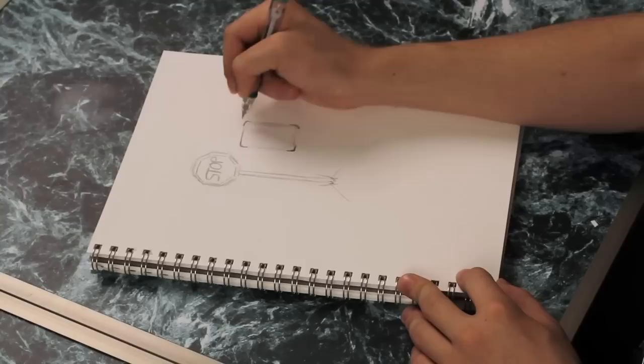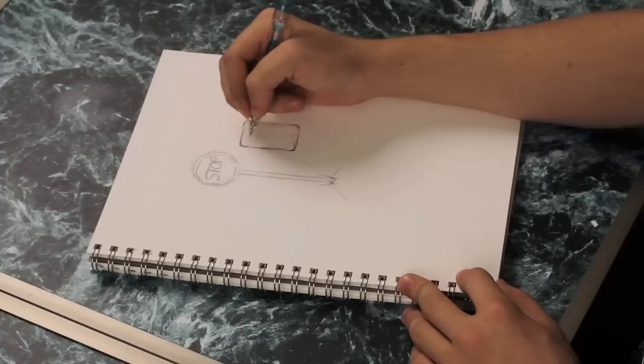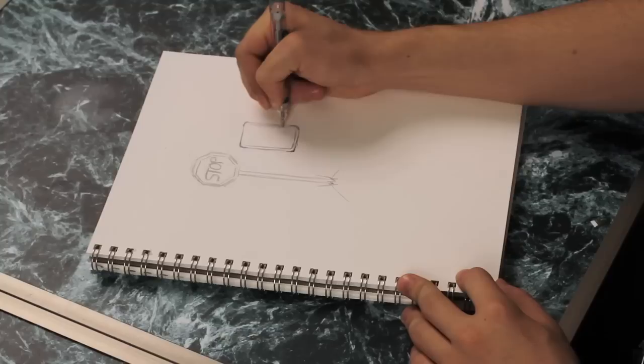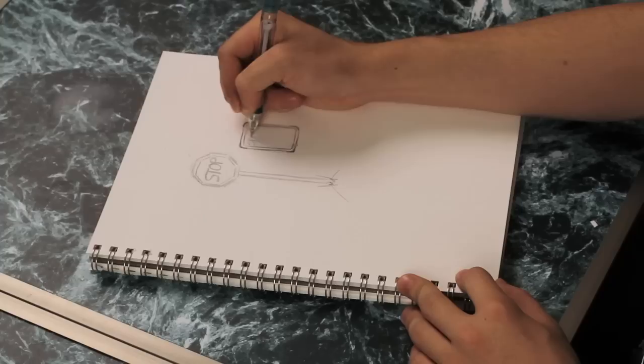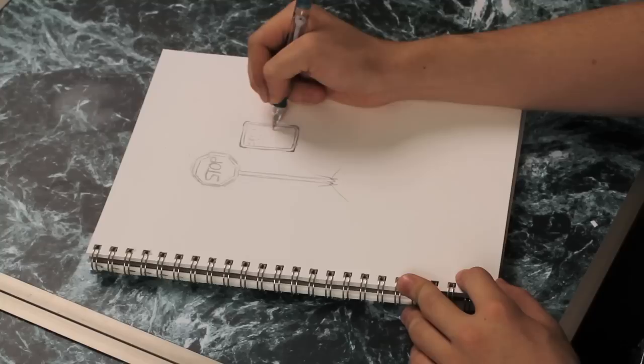And then connect them all together. Again, the same concept as a stop sign. I'm just going to outline it on the inside. And then I can start to place the text, which with a speed limit, you have the word speed limit. And then whatever amount you want that to be.